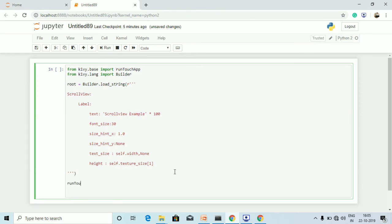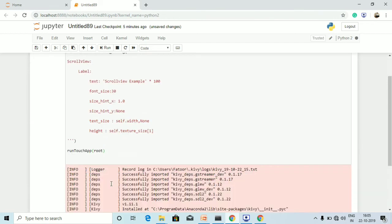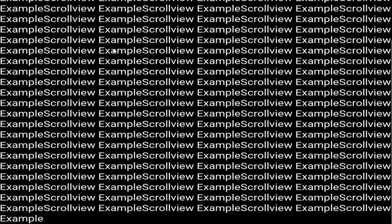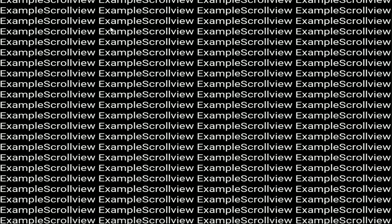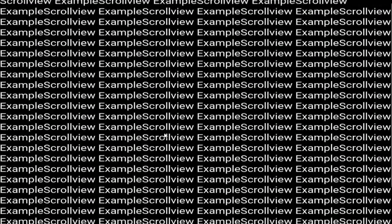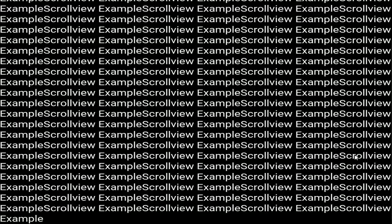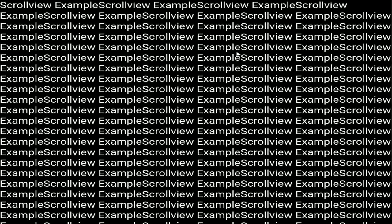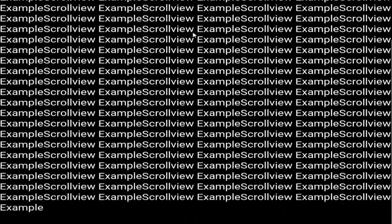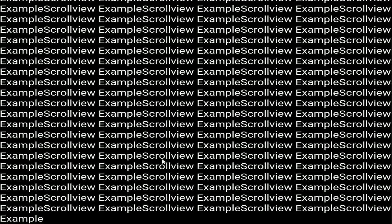Now let's run the program by calling run_touch_app and passing the root variable. We got the output — as you can see, I have 'ScrollView Example' multiplied by 100, so all 100 instances of the text are visible. I can scroll down by just moving the mouse — scroll up and scroll down. This is the output of the ScrollView example.